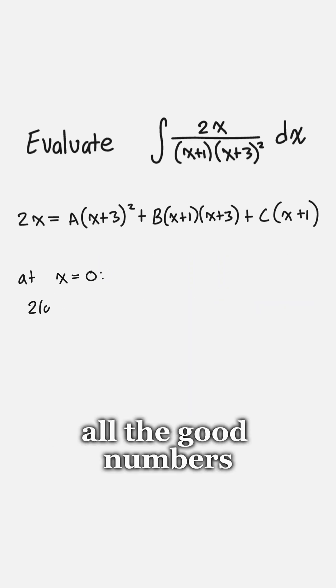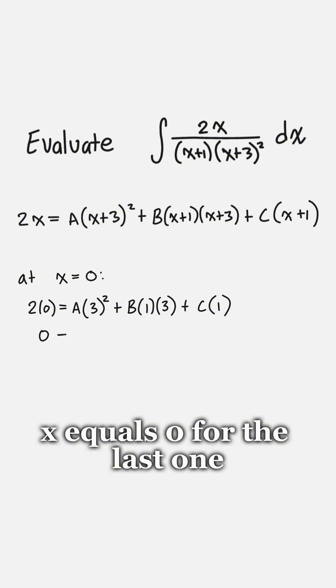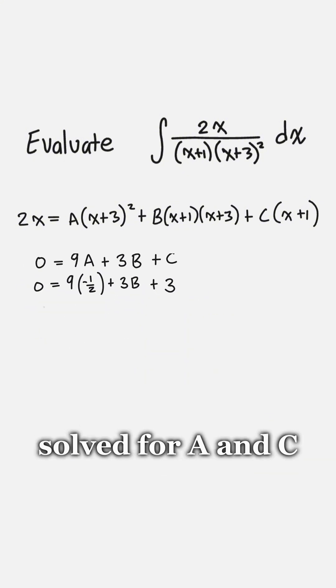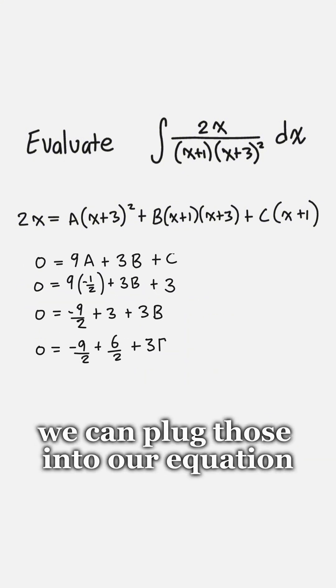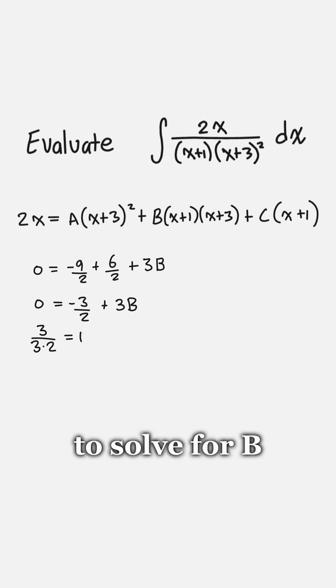Now we've used up all the good numbers, so we can just pick x equals 0 for the last one. Since we've already solved for a and c, we can plug those into our equation and do some rearranging to solve for b.